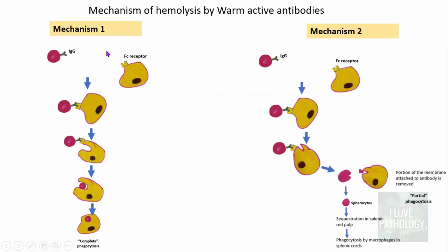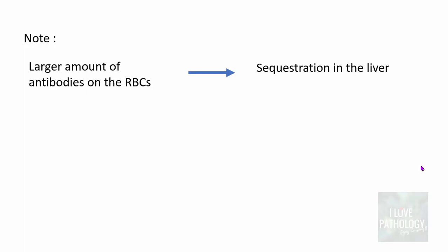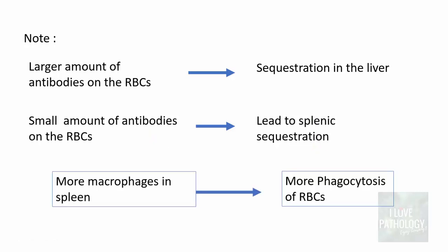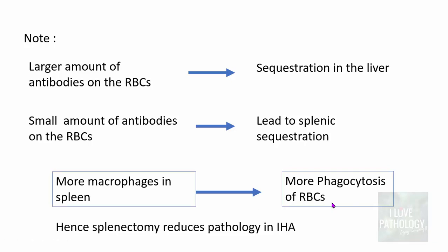To summarize the mechanisms of hemolysis by warm active antibodies: when the amount of antibodies on the RBC surface is large, there is sequestration in the liver. When the amount is small, there is splenic sequestration. The spleen has many macrophages, which is why there is extensive RBC phagocytosis there — and this is why splenectomy reduces pathology in most immune hemolytic anemias, particularly the warm antibody type.